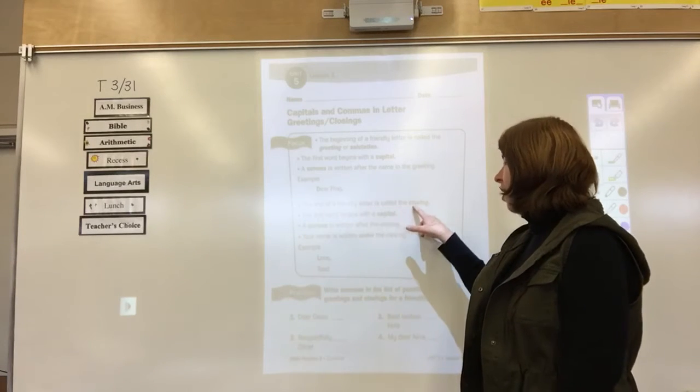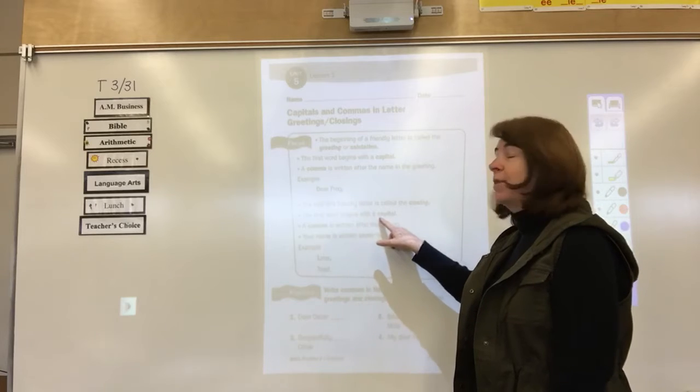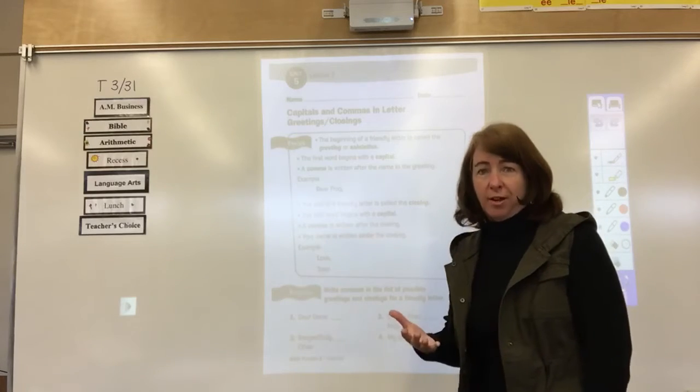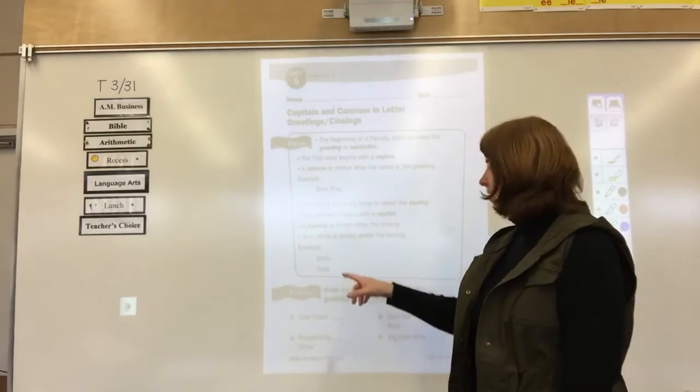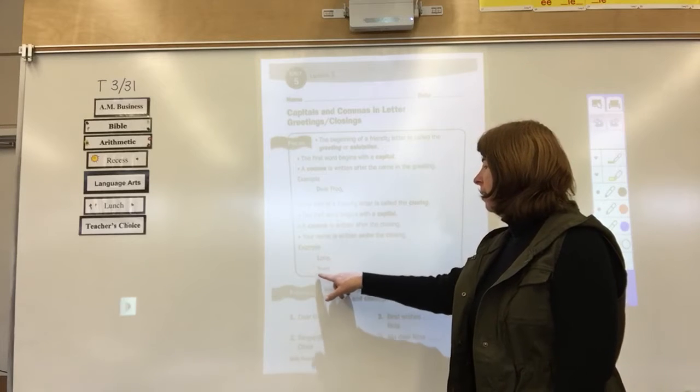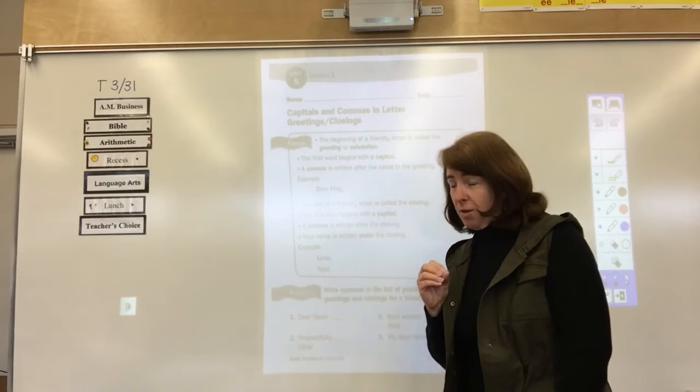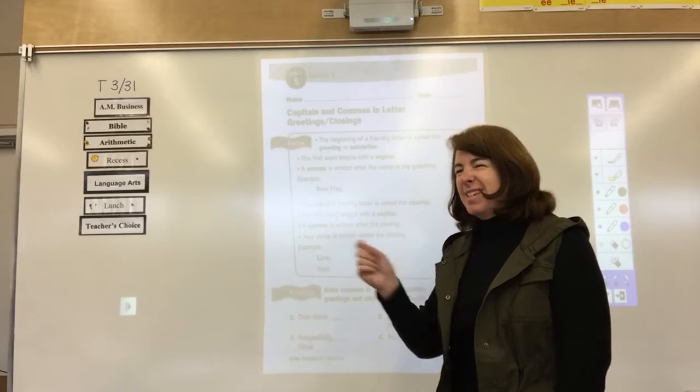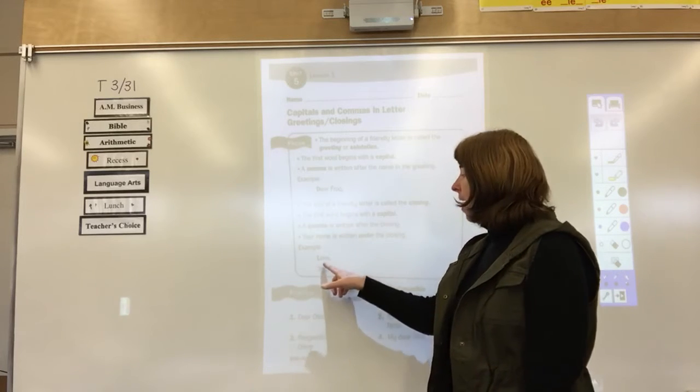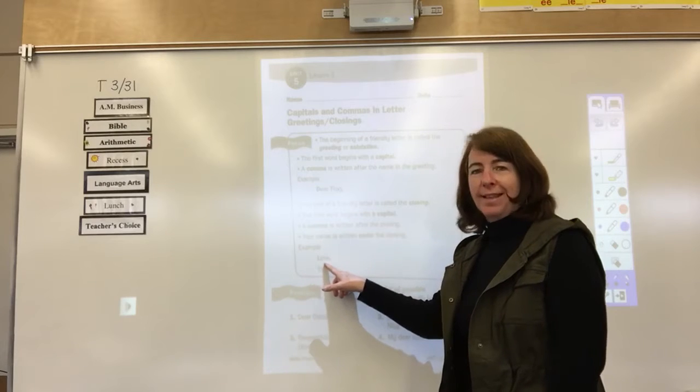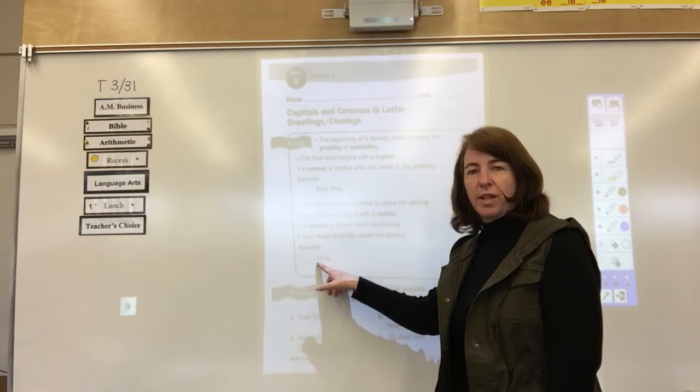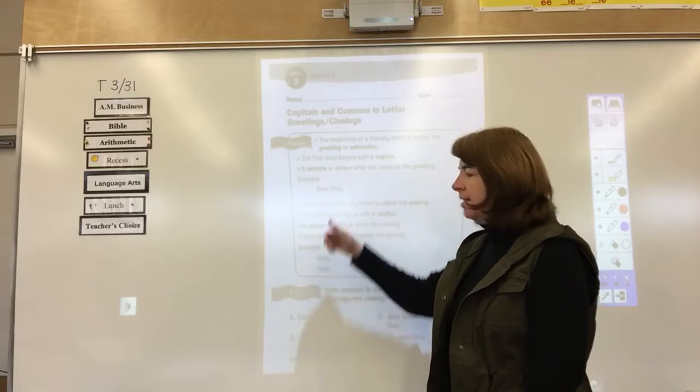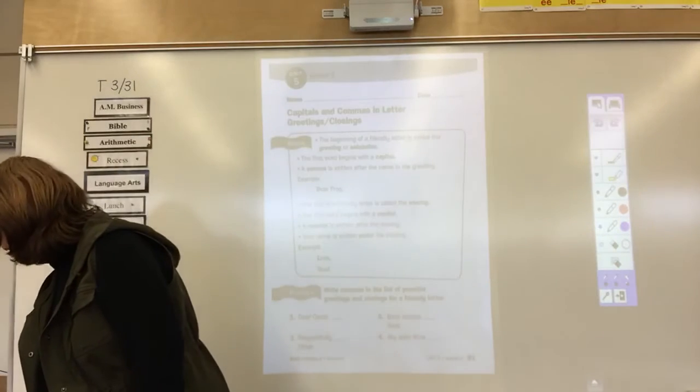Oh, Toad is writing to Frog now. So dear frog, comma. That is called the greeting or the salutation. Then we have the end of a friendly letter. It's called the closing. The first word begins with a capital. A comma is written after the closing. And then your name is written under the closing because you wrote the letter. In this case, Toad is writing the letter. So it's capital L for love, comma, capital T for Toad. Now, just a quick note. When we're writing a sentence, like I love my mom and dad, because it's in a sentence, you don't capitalize the word love. But when it's in the closing of a letter, a friendly letter, you would capitalize the word love. So love, comma, Toad underneath. So that is our focus box.